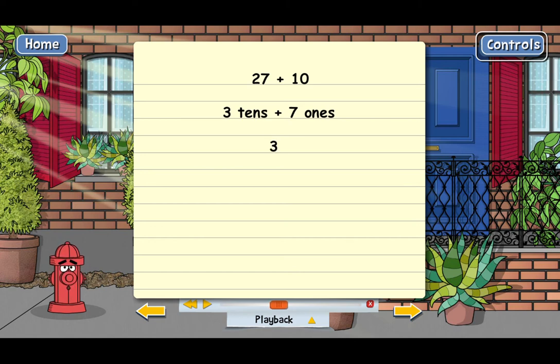Since we still have 7 ones, what should go in the ones place of the answer? You got it. And that gives us an answer of 37. So, 27 plus 10 actually equals 37.